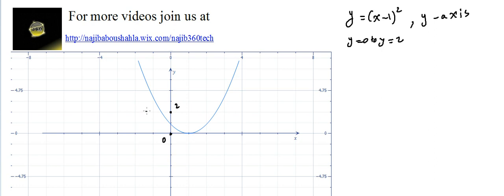We need the area between the curve and the y-axis from 0 to 2 — this means we need this area plus this area. We might think we can find one part and multiply by 2 because it's symmetrical, but actually it's not symmetrical. It's not symmetrical at all.